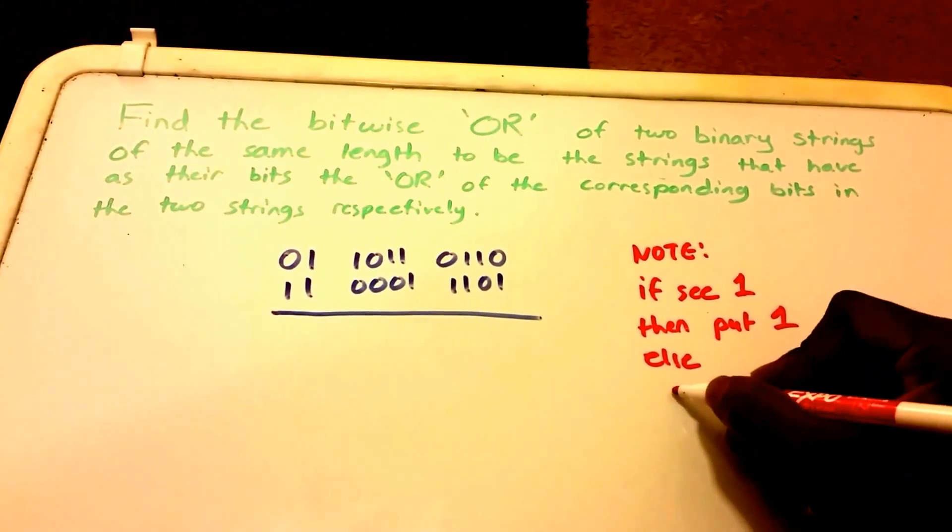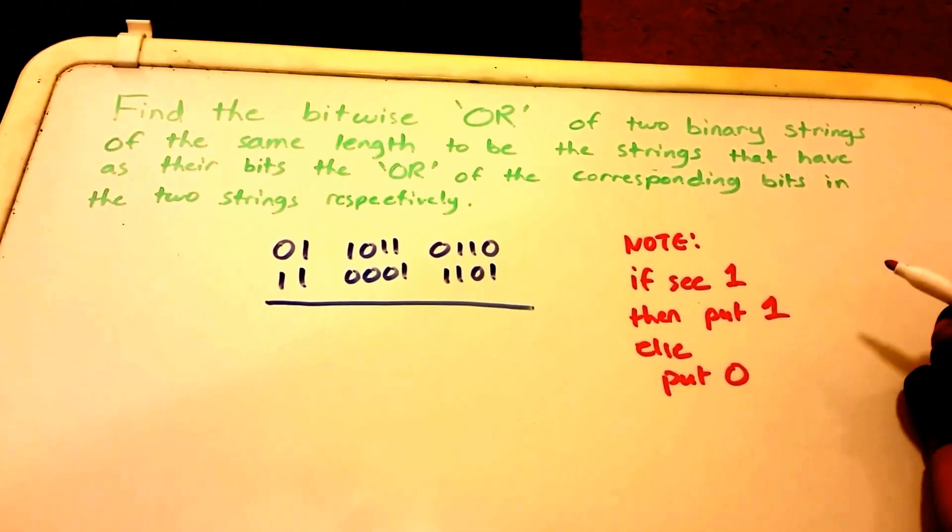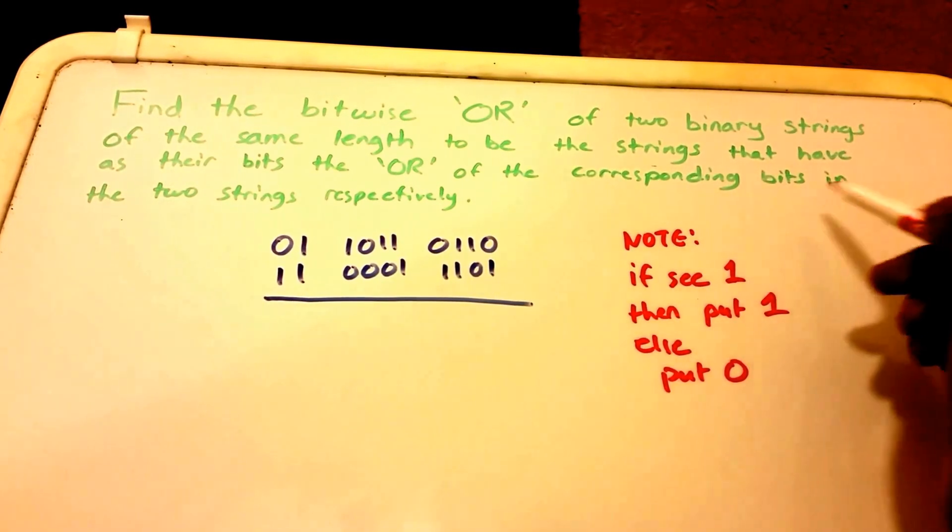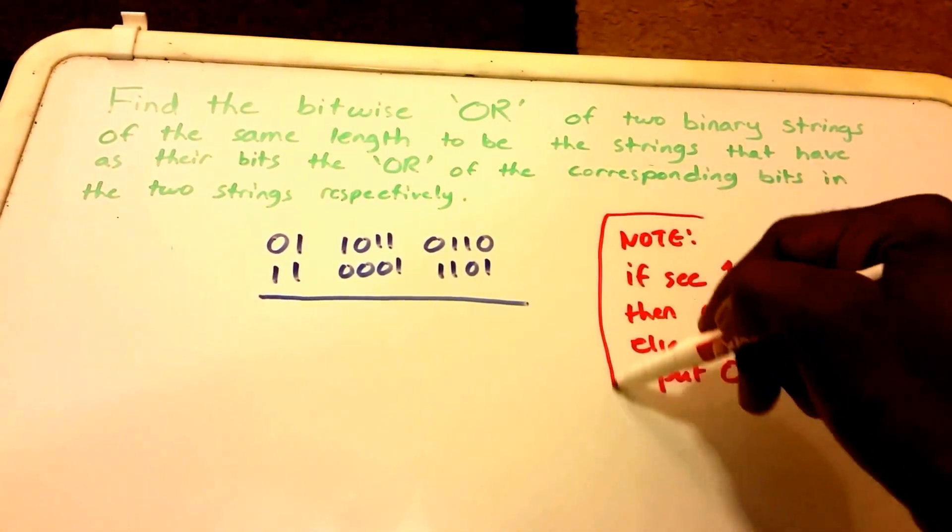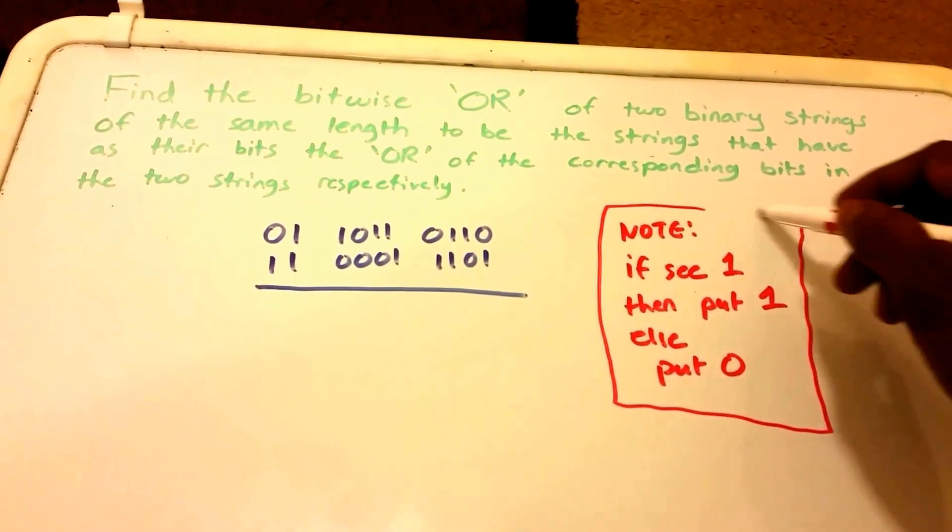Else we're going to put 0. Okay? So I'm just gonna put this square there.